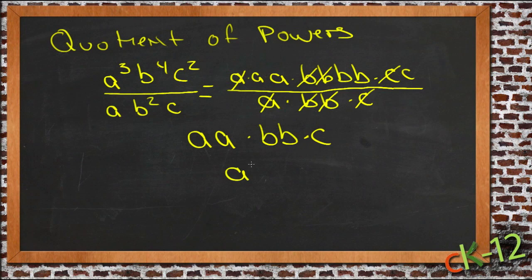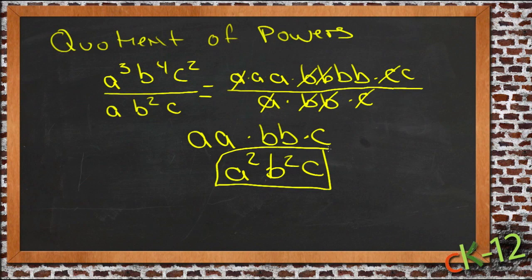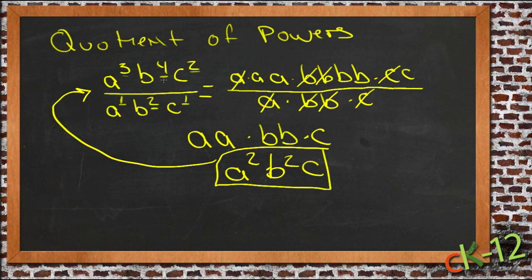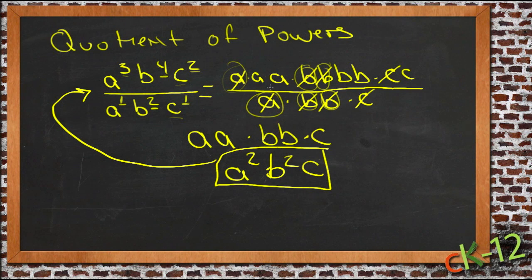If we write that back in shorthand, we end up with a squared times b squared times c. That's the longhand way of working it out. The shorthand way is just to subtract the exponents: 3 minus 1 gives a squared, 4 minus 2 gives b squared, and 2 minus 1 gives c to the first. When you're dividing numbers raised to exponents, as long as the base is the same, you just subtract the exponents — you're removing matching pairs and leaving what's left.